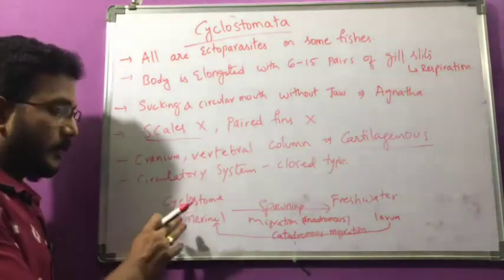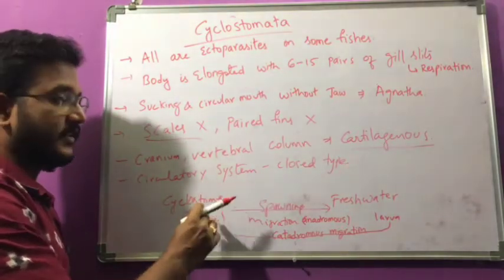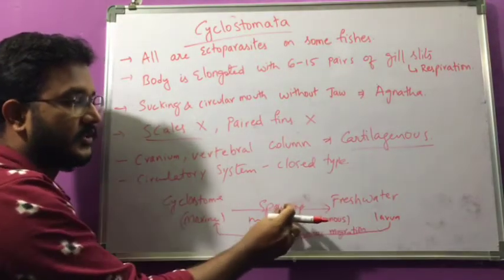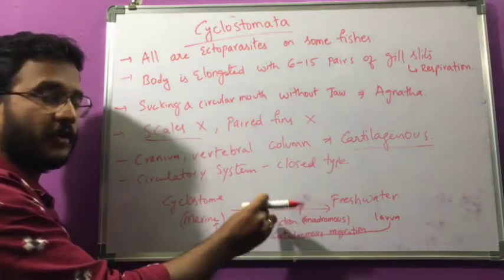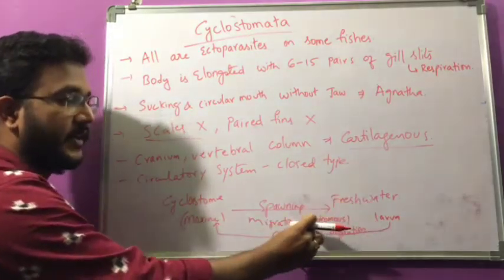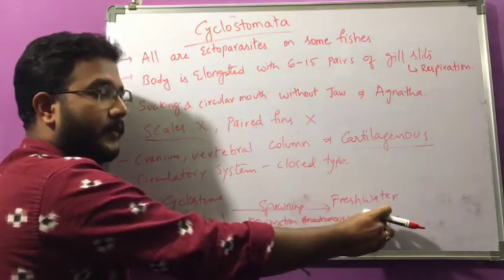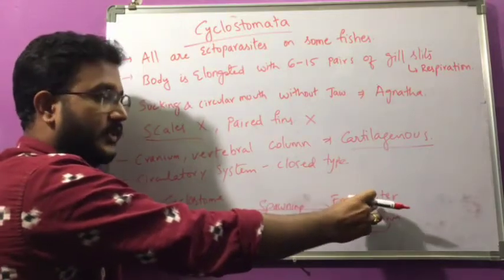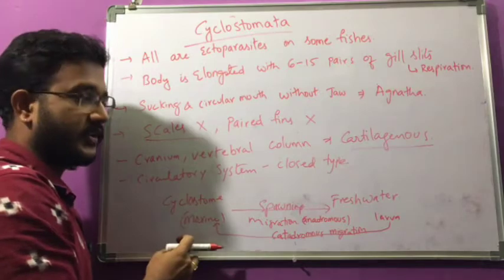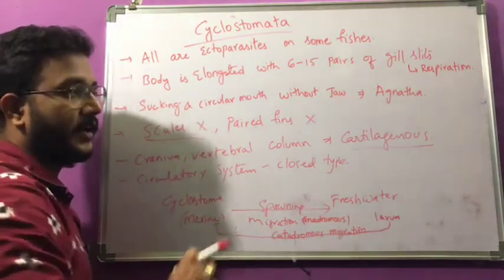To summarize: Cyclostomes completely belong to marine environments, but the mothers migrate to fresh water to lay eggs — a process called spawning. The migration from salt water to fresh water is anadromous migration. After the mothers die, the eggs develop into larvae, and the larvae return to their native marine waters, which is catadromous migration.